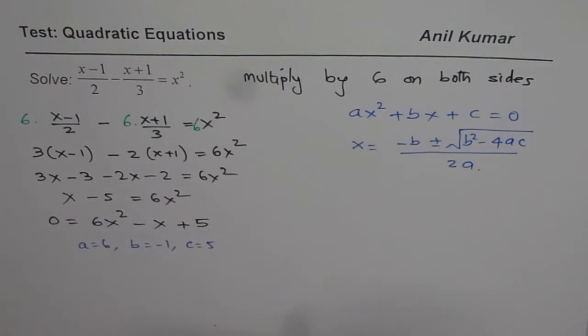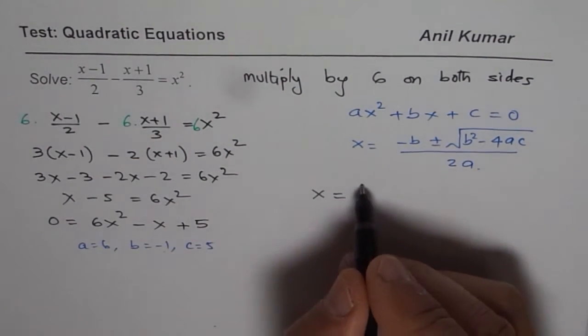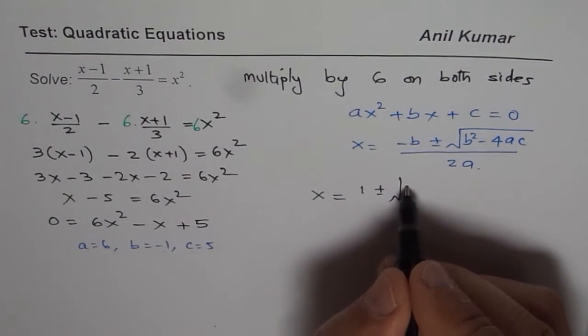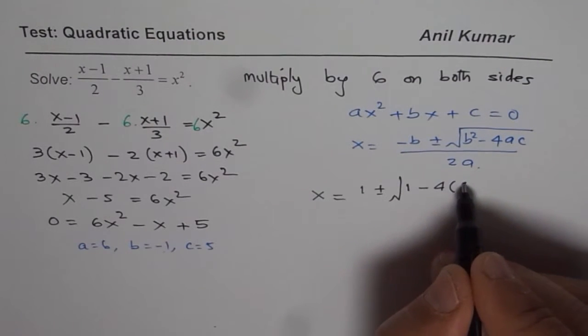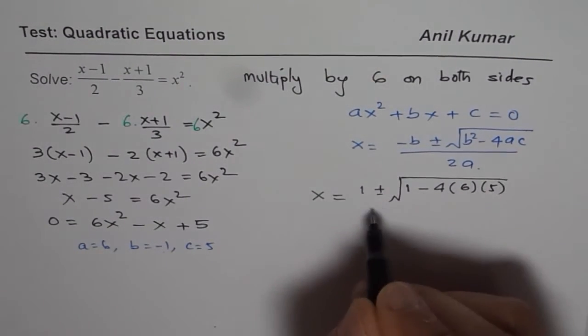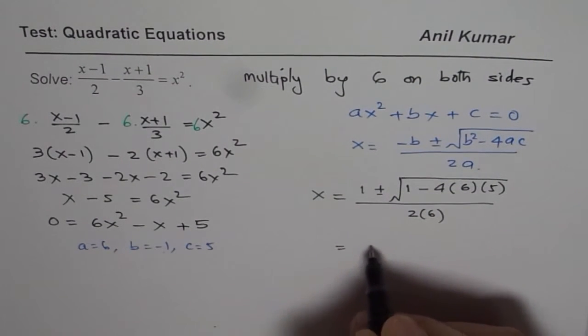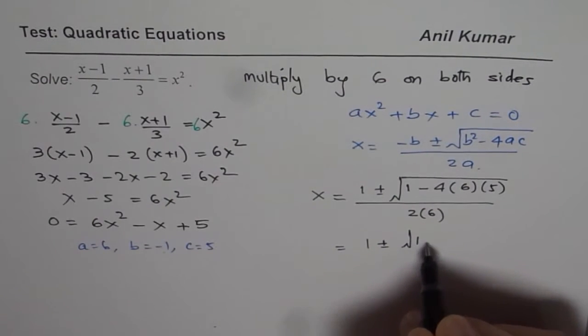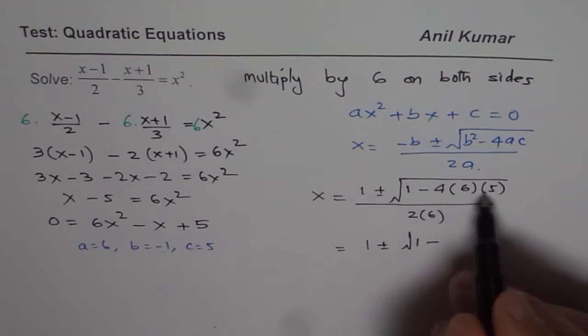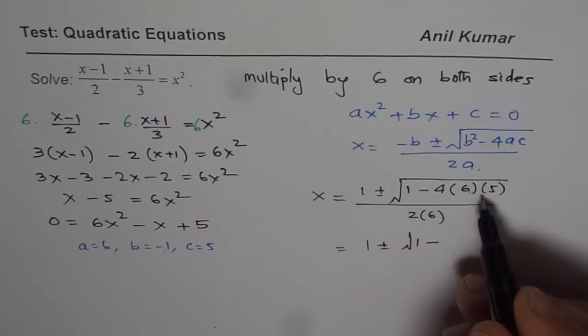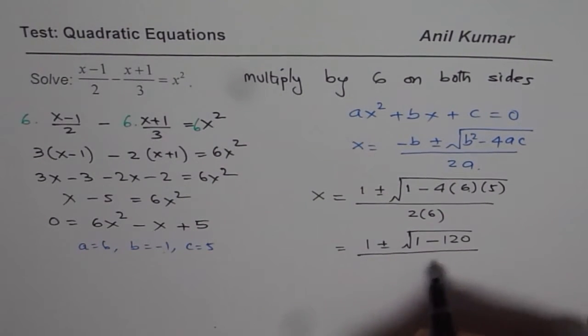So if I use this formula, I get x = (1 ± √(1 - 4(6)(5)))/(2(6)). So what we get here is 1 ± √(1 - 120)/12. 6 times 5 is 30, 4 times 30 is 120, so 1 minus 120 divided by 12.